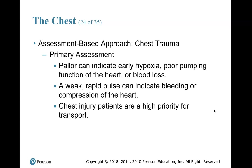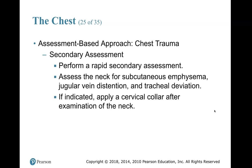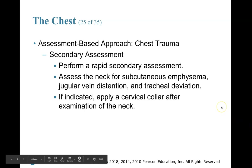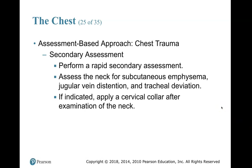During your secondary assessment, perform a rapid head-to-toe exam — don't get caught up only on the chest injury. Look at the rest of the body — you might miss a bleed, a broken leg that needs splinting, or an impalement elsewhere. Assess the neck for subcutaneous emphysema — that bluish discoloration under the skin if blood has been pushed back into the body. Look for jugular vein distension and tracheal deviation. Tracheal deviation is the trachea shifting left or right depending on which side the tension pneumothorax is. If indicated, apply a cervical collar after examining the neck.